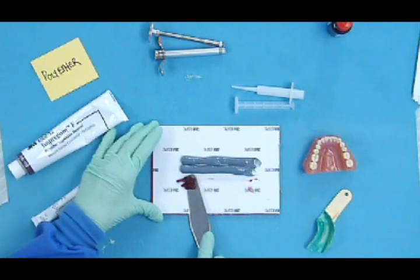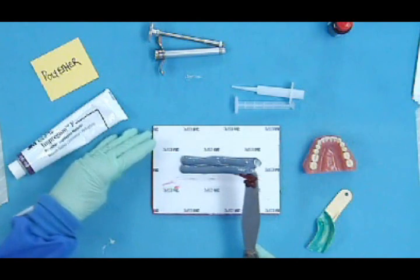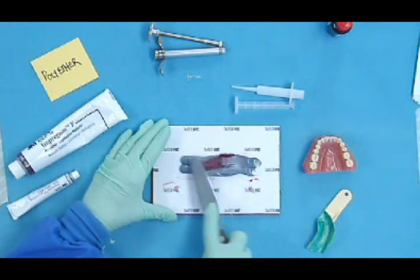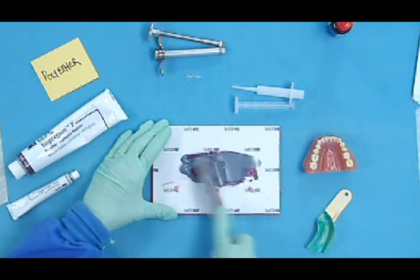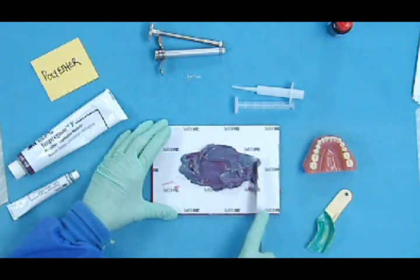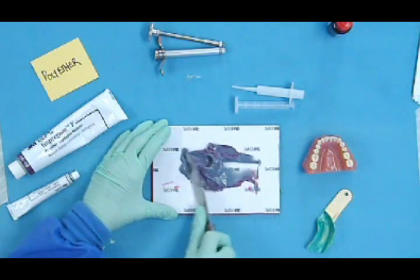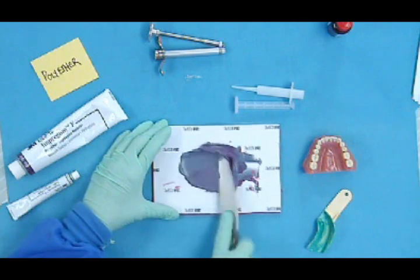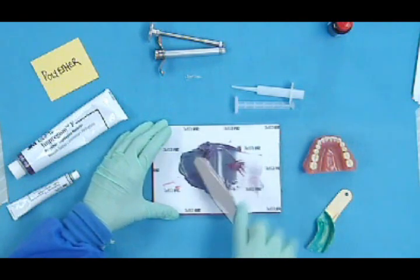And just as before, we're going to put all the catalyst on the spatula first and then mix it into the base. Try to keep all of these materials, when you mix a material like this, try to keep it all on one side of the spatula.